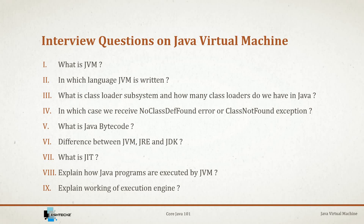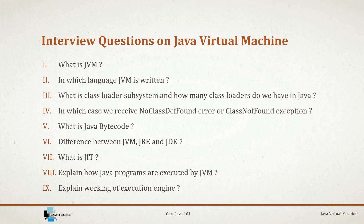The fifth question is: what is Java bytecode? Java bytecode is the intermediate language between Java and machine language — whenever Java code is compiled it generates a .class file which contains bytecode. The sixth is the difference between JVM, JRE, and JDK. JVM is an abstract machine that executes Java bytecode. JRE (Java Runtime Environment) provides an implementation of the JVM. JDK (Java Development Kit) consists of JRE plus tools such as the compiler, debugger, etc., required to write Java programs.